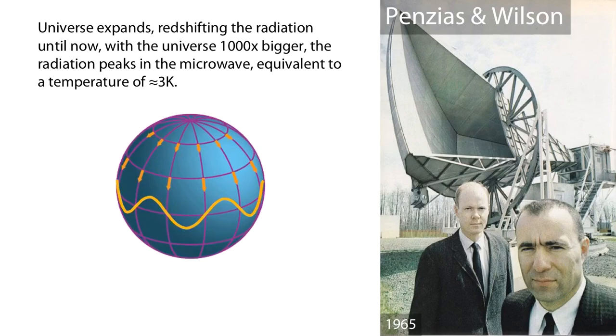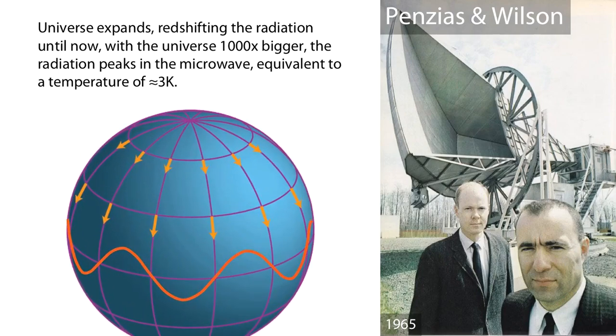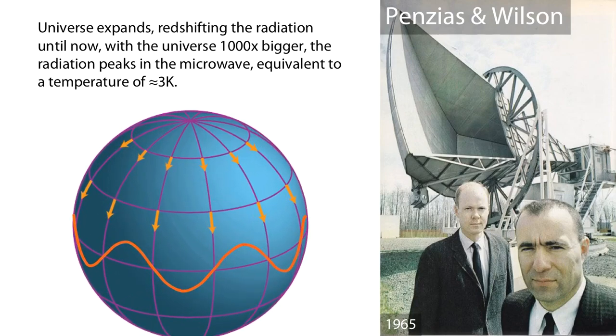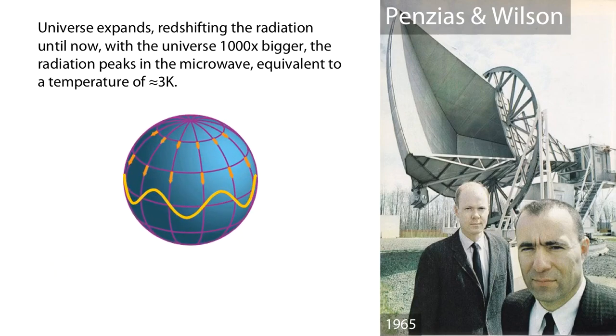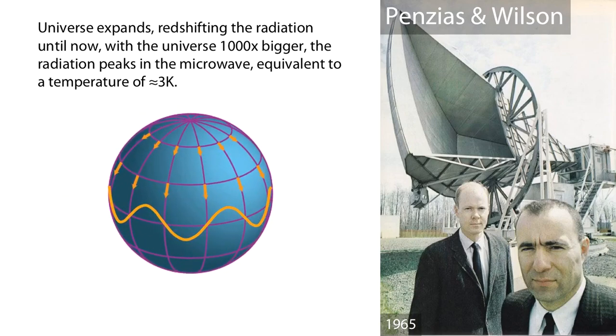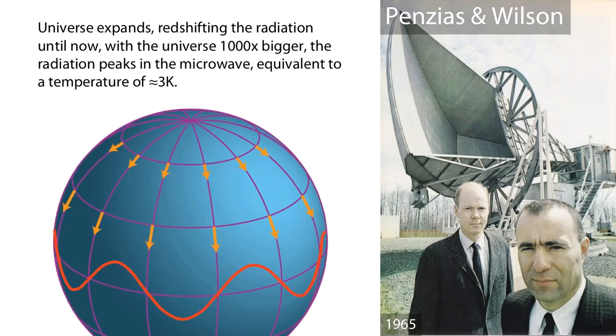And this illustration shows it quite nicely. As the universe expands, the photons, the waves that are travelling out through the universe, get stretched out. They get expanded. And so what was once emitted at 3,000 Kelvin now appears to us to have a temperature of closer to 3 Kelvin.